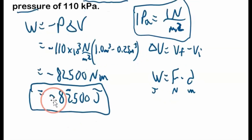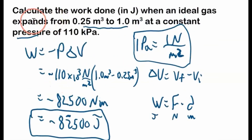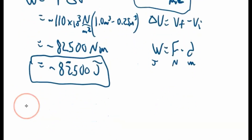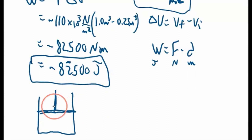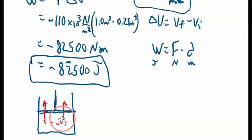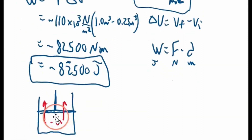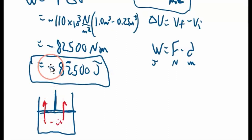It's negative — what does that mean? Well, the gas is expanding, so it's doing work. It's using energy in the form of work, transferring its energy as work into the surroundings. That means the system is losing energy — it's losing energy by pushing on the piston. Since the system is losing energy, work is negative. Negative means the energy is lost by the system.